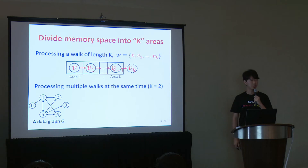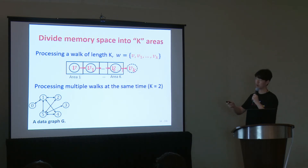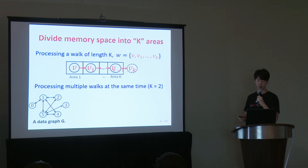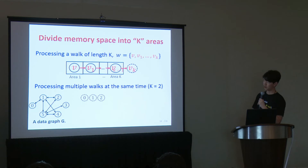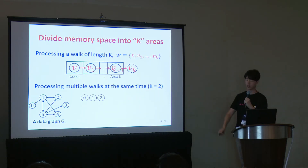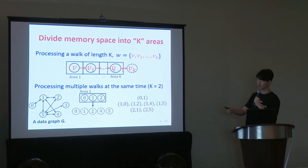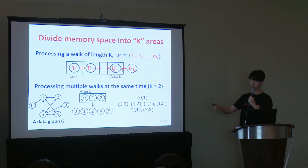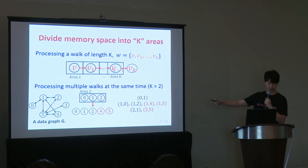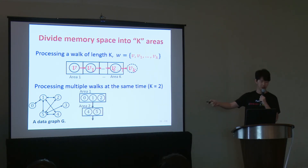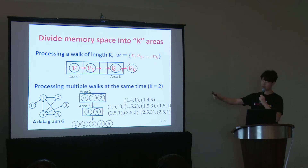Our idea is to divide the memory space into k areas and load the vertex and each adjacency list in each area. For efficiency, we load multiple vertices in each area and enumerate multiple walks at the same time. For example with k=2: we load vertices 0, 1, 2 into area 1 and process their adjacency lists to enumerate length-1 walks. Then we select vertices to traverse further — say vertices 4 and 5 — load them into area 2, and process their adjacency lists. In this way, we can safely enumerate walks of length 2.